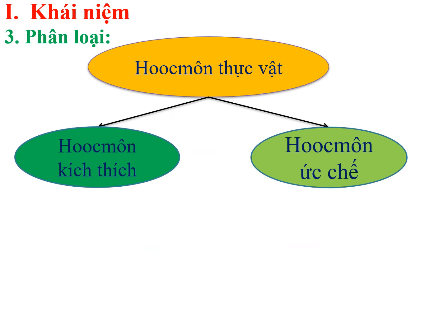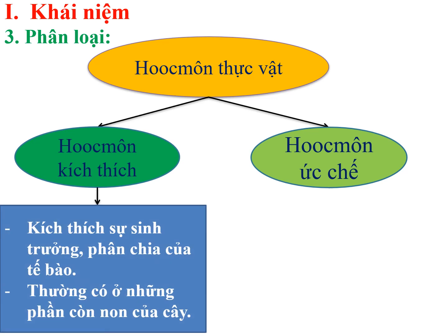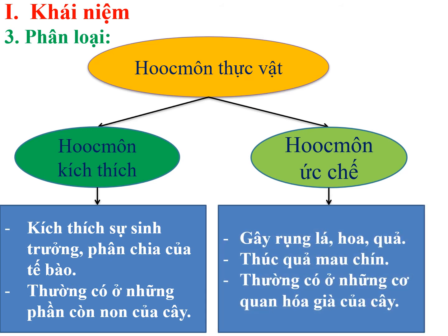Về mặt phân loại, hốc môn thực vật được chia làm 2 nhóm: nhóm hốc môn kích thích và nhóm hốc môn ức chế. Trong cơ thể thực vật luôn có sự tồn tại của 2 nhóm này, và tùy vào từng giai đoạn sinh trưởng phát triển cũng như tùy vào các cơ quan của thực vật mà nhóm hốc môn nào chiếm ưu thế hơn. Nhóm hốc môn kích thích thường kích thích sự sinh trưởng và phân chia tế bào, thường có nhiều ở những phần còn non. Nhóm hốc môn ức chế sẽ ức chế sự sinh trưởng, gây ra sự rụng lá, rụng hoa, rụng quả hay làm quả chín, thường xuất hiện ở những cơ quan đã trưởng thành hay đã già.